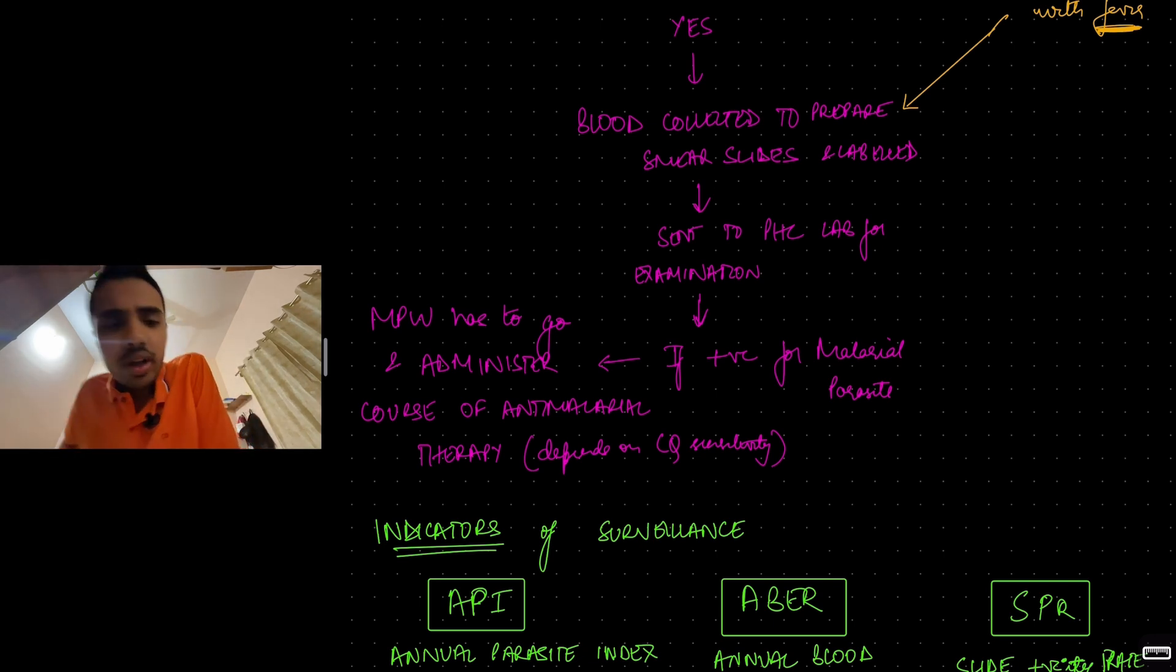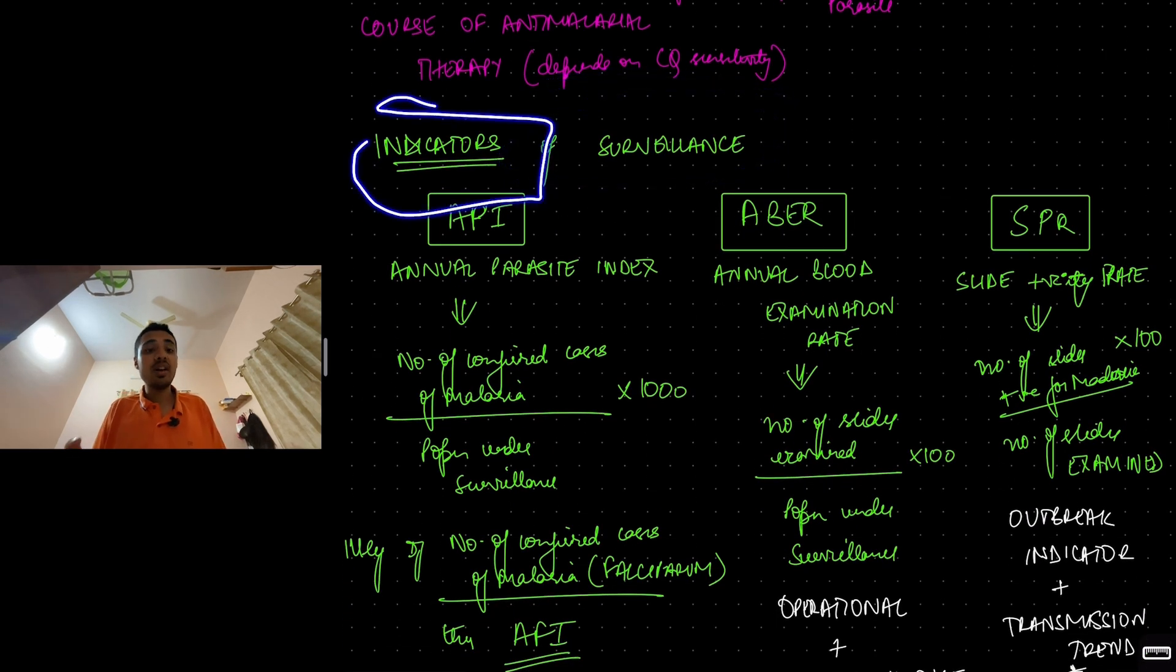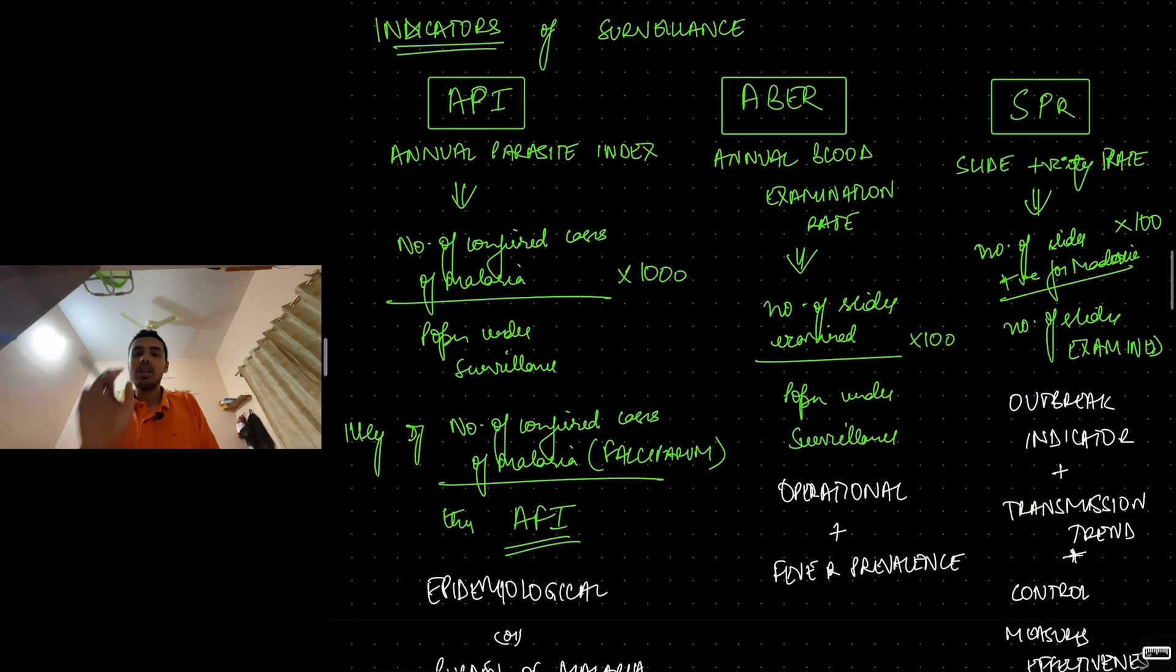Now you have detected cases, you have diagnosed them, you have treated them. So you have a lot of data now. What are the indicators from this surveillance? From this surveillance, you will get certain indicators, certain rates. This is very important.